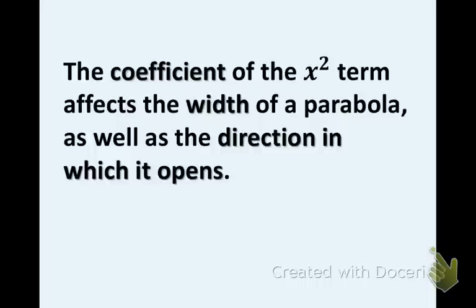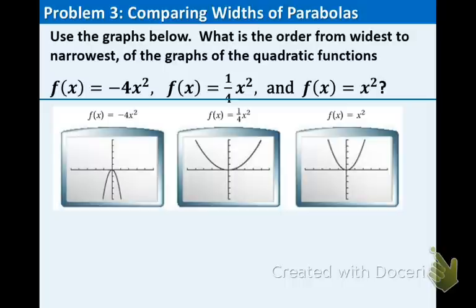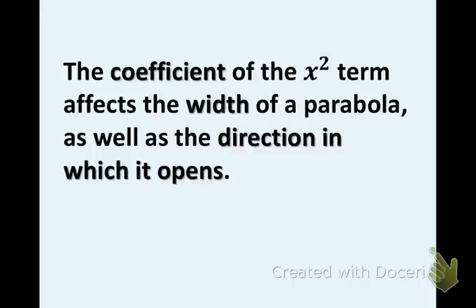Now let's talk about the coefficient of the x squared term. In the last example, the coefficient was 1 third. Did you know that the coefficient of the x squared term affects the width of a parabola as well as the direction in which it opens? If the coefficient is positive, then the parabola opens up. If the coefficient is negative, the parabola opens down.